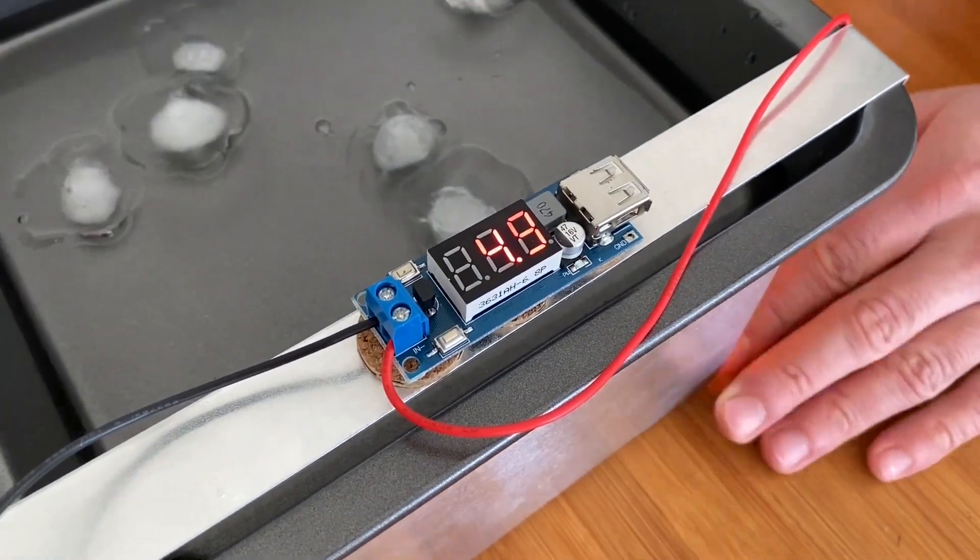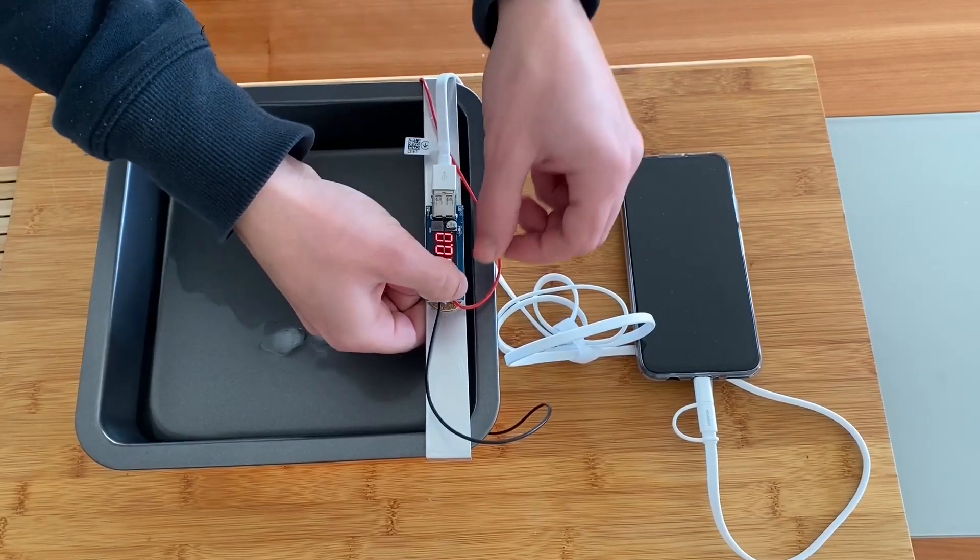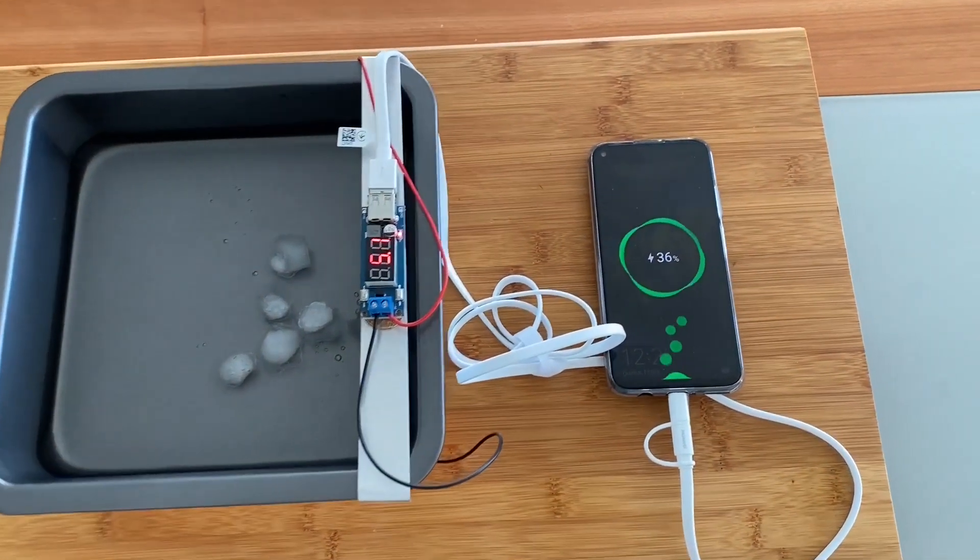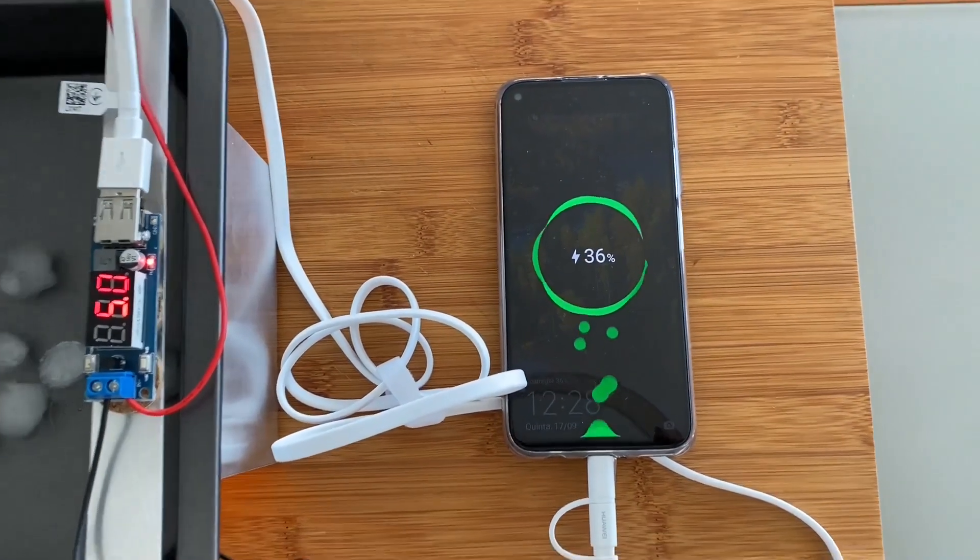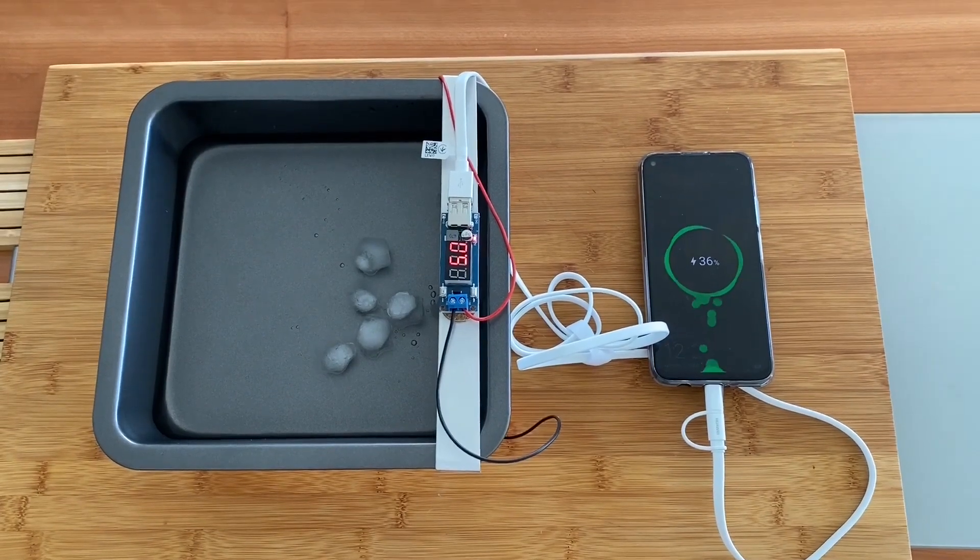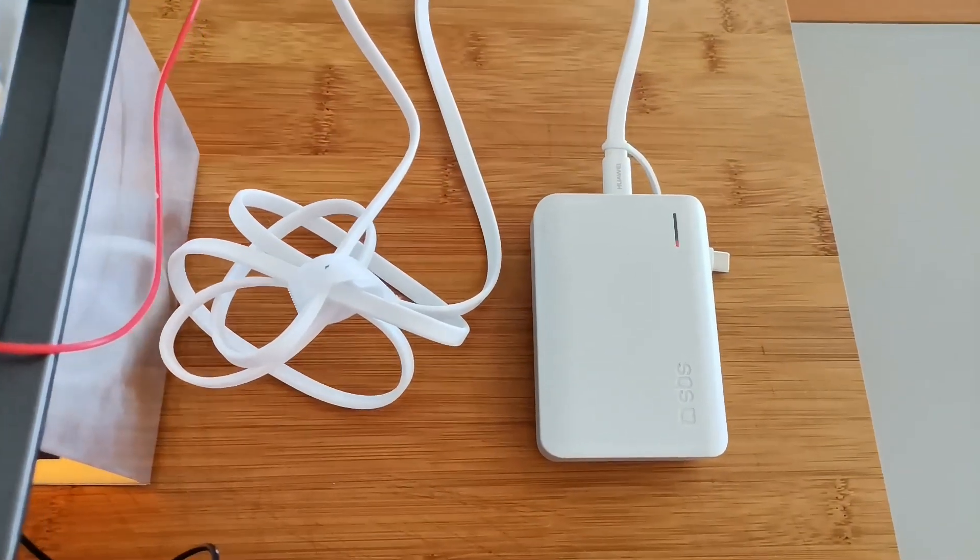It's perfect to take out camping in the wild. If you run out of battery on your phone, you can simply take out the thermoelectric generator and charge it. You can even charge a power bank with it.